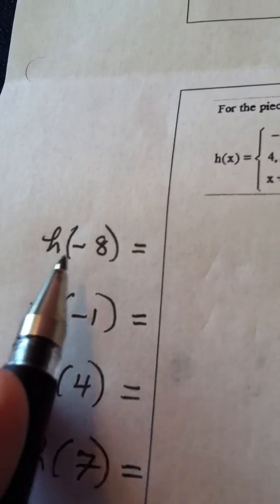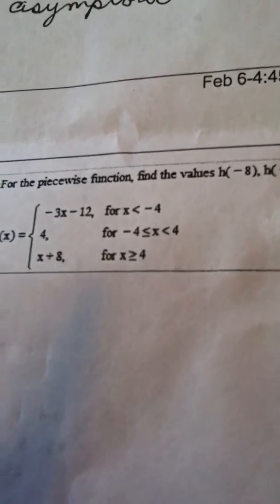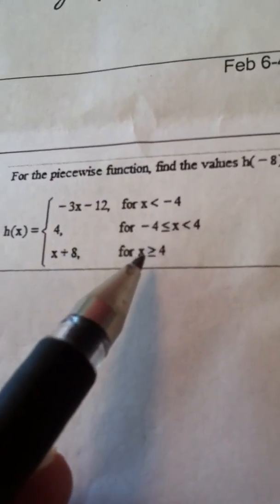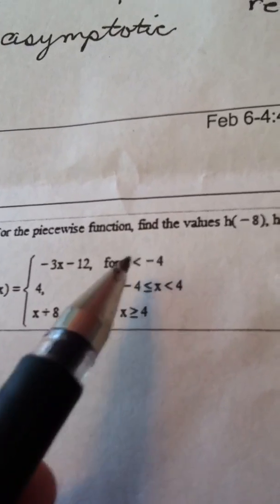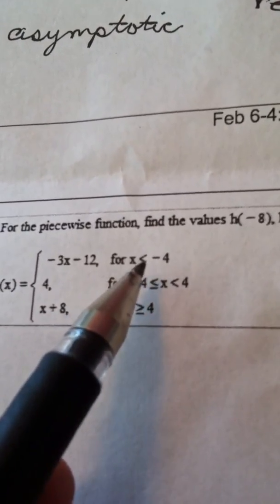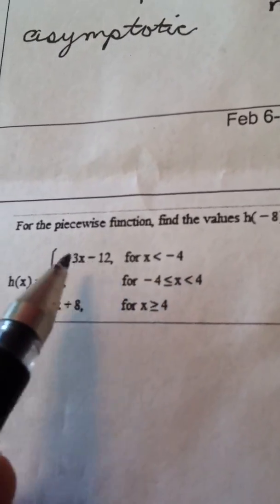So when I say find h of negative 8, the first thing we do is we look at negative 8. Negative 8 fits the top category, right? Because negative 8 is less than negative 4. So we know we're on the top tier. So I take this formula.